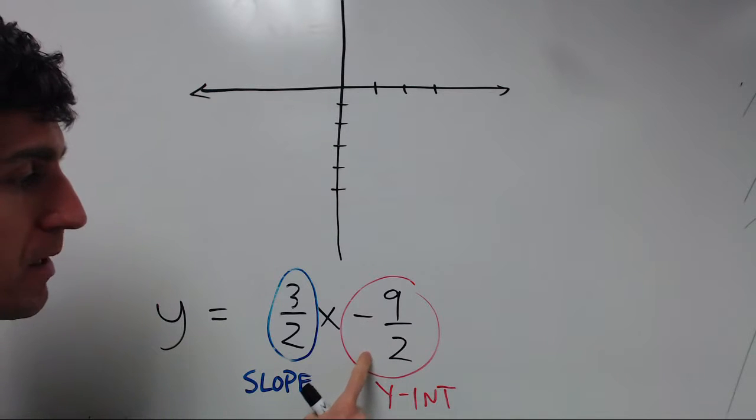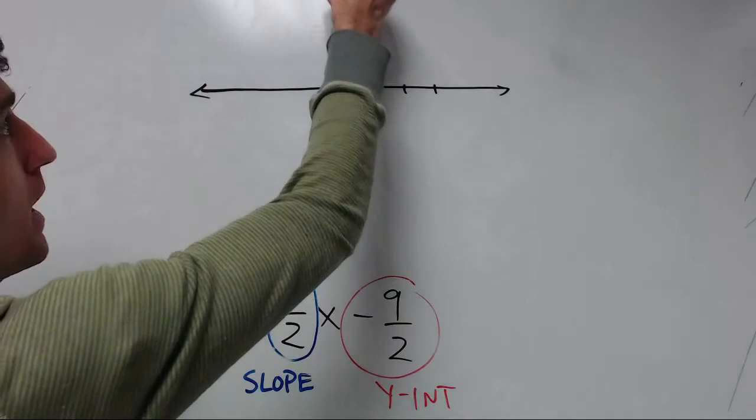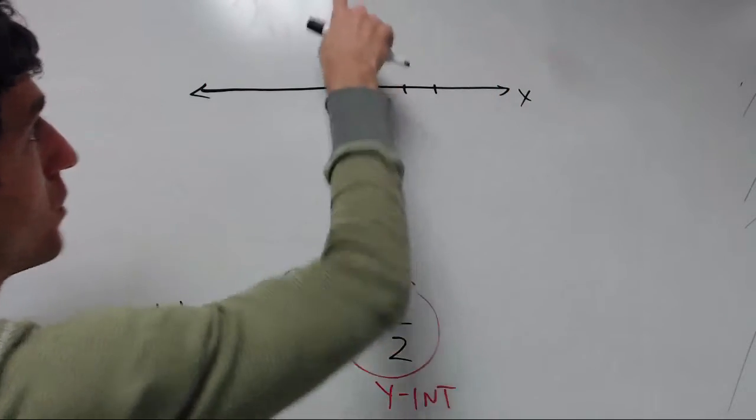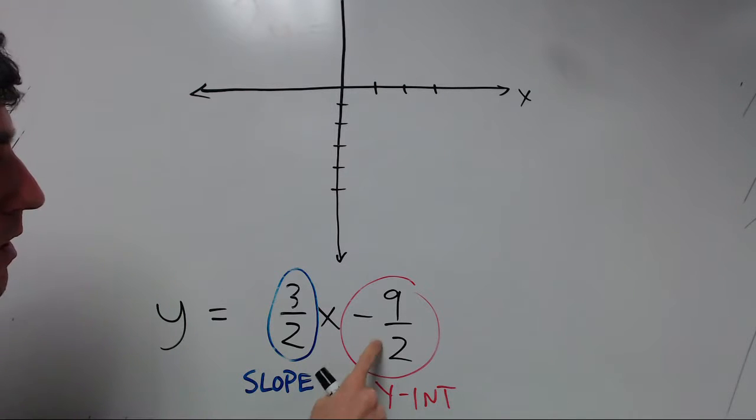So what we're going to do is we're going to start with the y-intercept. And we're going to put a point on the graph corresponding to that. So this is our y-axis. And so the y-intercept is where the graph crosses the y-axis. Negative 9 halves is between negative 4 and negative 5.